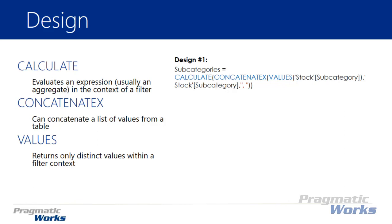The last thing you'll see is the Values function. The Values function returns only a distinct list of values in our filter context. If we had multiple subcategories that were the exact same value, we don't want to list the same value more than once in our comma-separated list — we only want a distinct list. So we use the Values function to ensure that. This first option allows you to create a concatenated list.